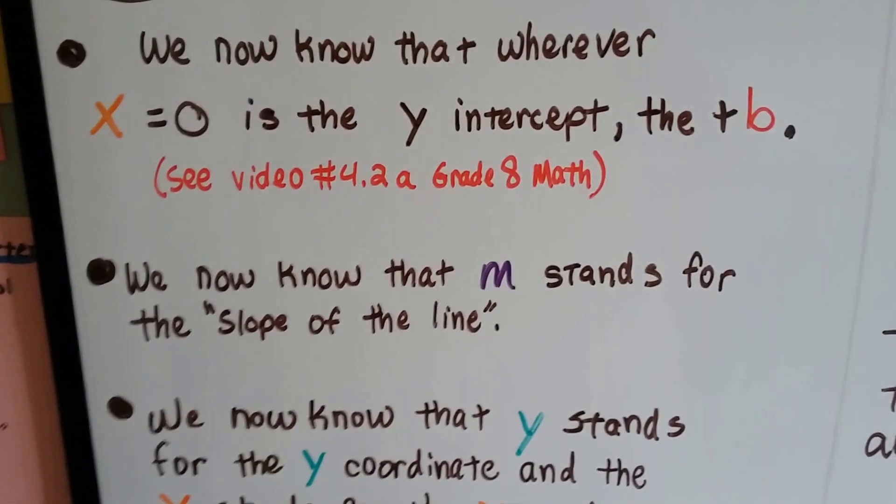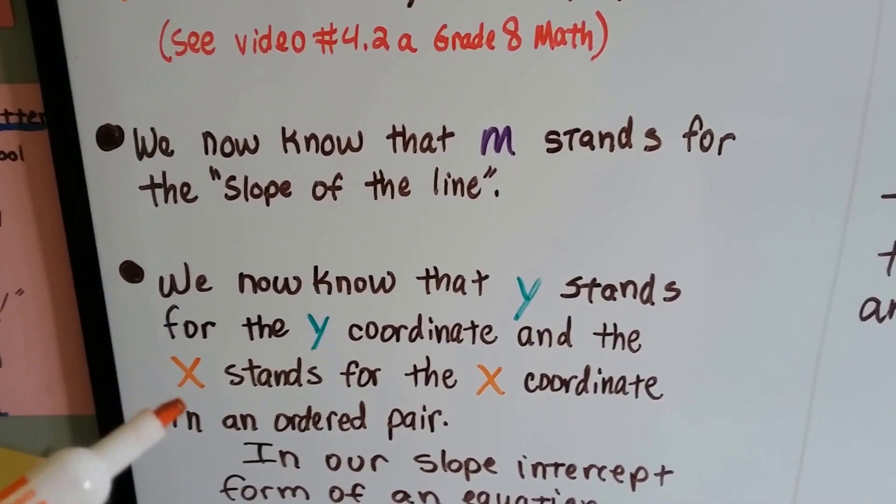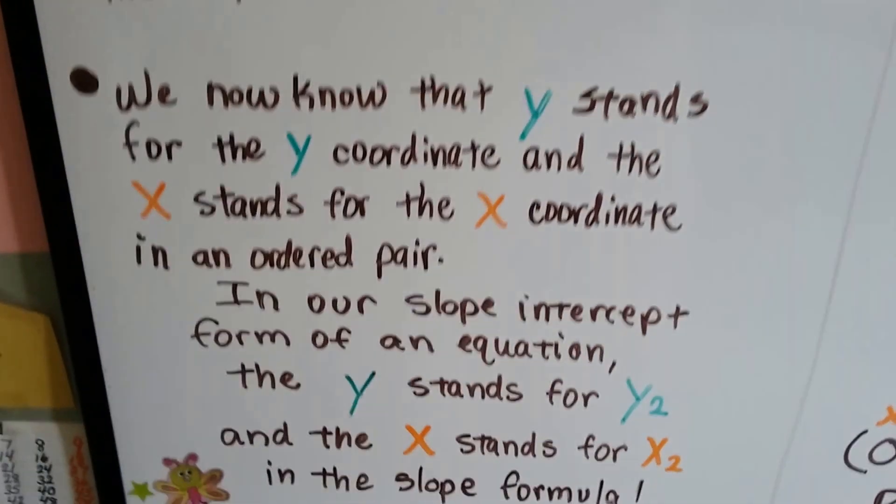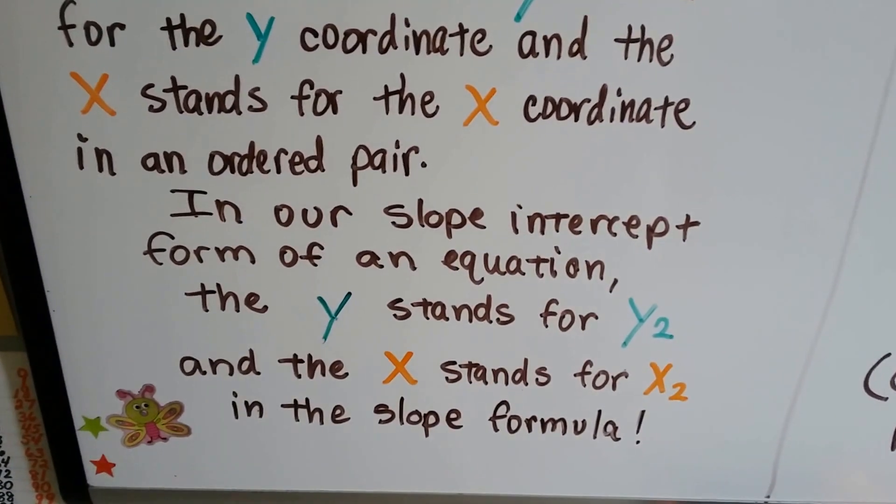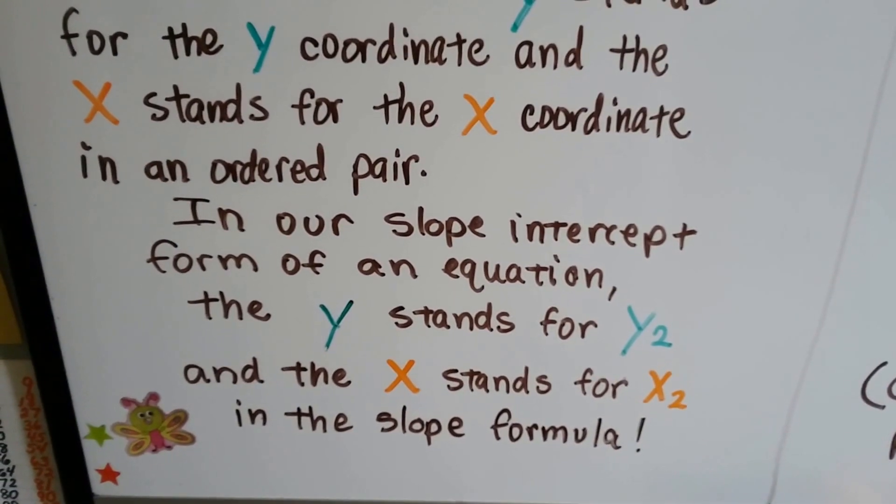Now we know that m stands for the slope of the line, like in the slope formula. We know that the y stands for a y-coordinate and the x stands for an x-coordinate in an ordered pair. In our slope-intercept form of an equation, the y stands for y2 and the x stands for x2 in the slope formula.